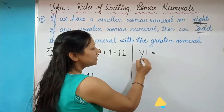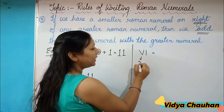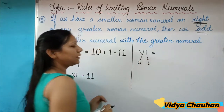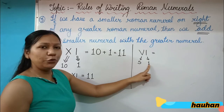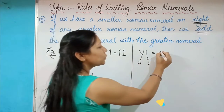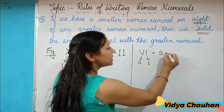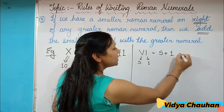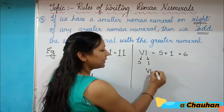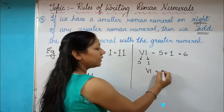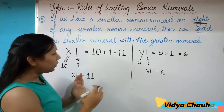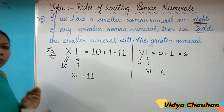Similarly, if it is written VI, the symbol V represents 5 and I represents 1. Once again a smaller numeral is on the right side of the bigger one, so we add: 5 plus 1 equals 6. Hence we can say that VI represents the digit 6.